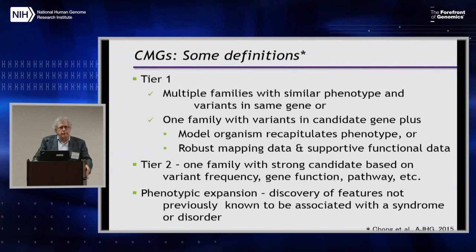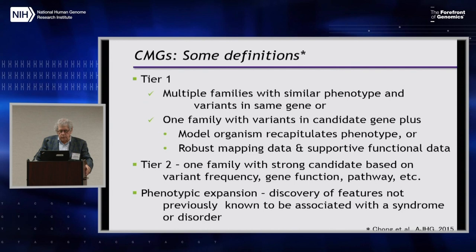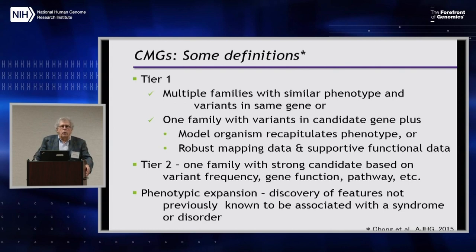Before I give you the current state of CMG results, let me be clear about some definitions. We use the term Tier 1 to mean that situation where we are at least 95 percent confident we have identified the variants and gene responsible for the phenotype. The evidence for Tier 1 includes multiple families with the same phenotype and rare variants in the same gene, or one family with variants in a candidate gene plus model organism data that recapitulates the phenotype, and/or robust mapping data and supportive functional data. Tier 2 is when we're quite confident but not as strongly — very often a single family with a strong candidate based on variant frequency, gene function, and pathway knowledge.